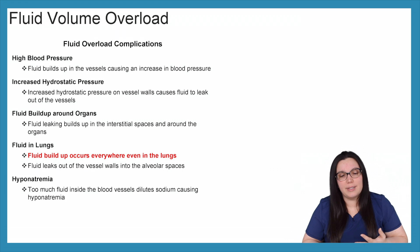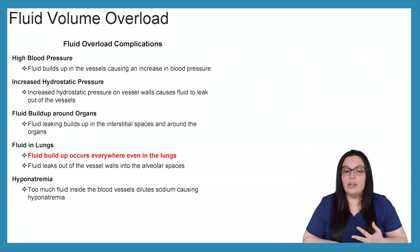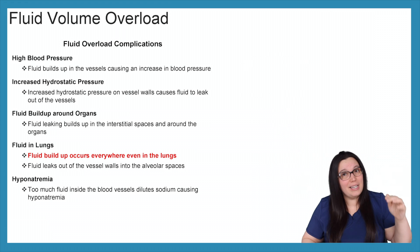Fluid build up around our organs. Fluid leaking builds up in the interstitial space. And fluid in our lungs. Fluid builds up everywhere, even in our lungs. So if we've got fluid building up through our body, just like in sepsis, we're going to eventually have fluid build up in our lungs. And again, fluid leaks out of the vessel walls into those alveolar spaces, making it harder for oxygen to diffuse.